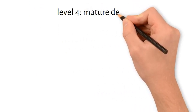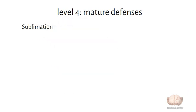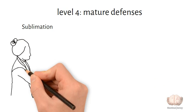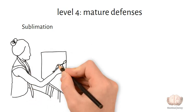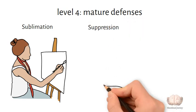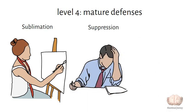Level four: mature defenses. Sublimation: channeling unacceptable impulses into more socially acceptable behaviors. For example, creating art, writing, or playing sports to express aggression or sexuality. Suppression: consciously postponing dealing with a feeling or conflict. For example, not thinking about a bothersome issue until you feel able to cope with it.